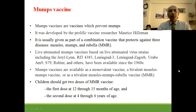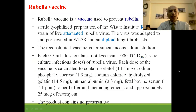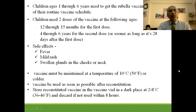Mumps vaccine prevents mumps, developed by Maurice Hilleman, used separately or as part of MMR. Given by 12 months of age up to 10 years, with a second dose before 6 years of age. Safe and effective. Rubella vaccine prevents rubella; the RA-27 strain is used as a live attenuated vaccine reconstituted and given subcutaneously 0.5 ml, with no preservative. Two doses are given; it can be given up to 6 years. Side effects include fever, mild rash, and swollen glands at the cheek or neck. Stored at 10 degrees centigrade.